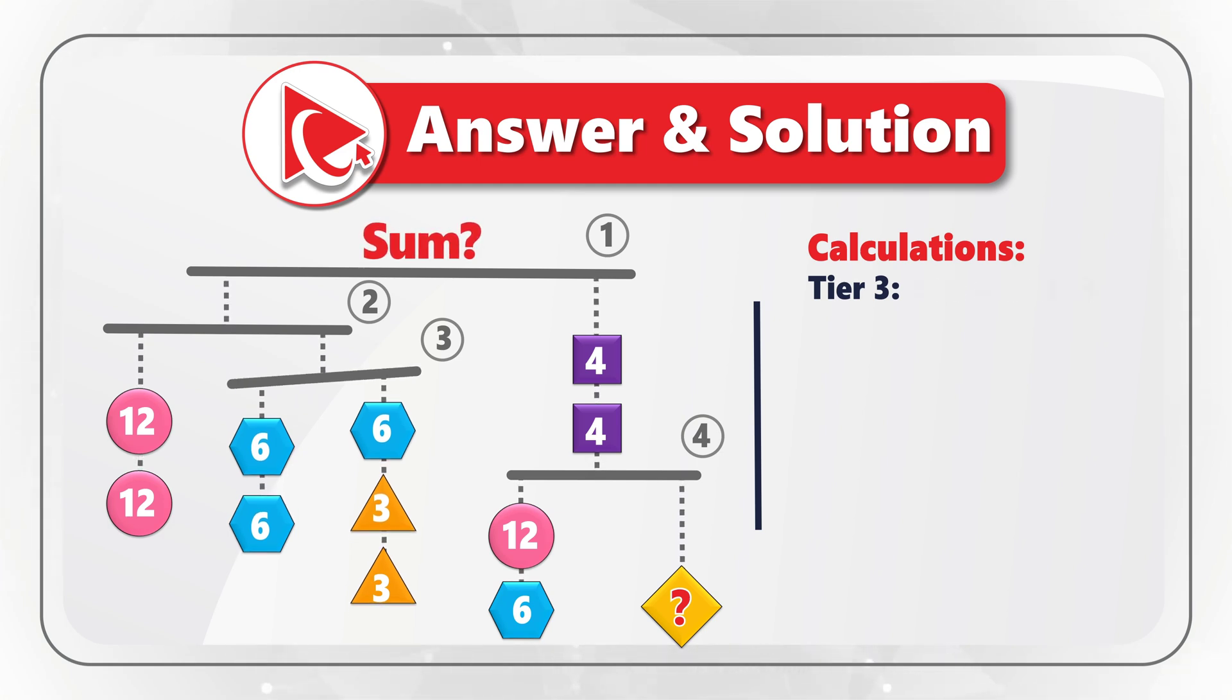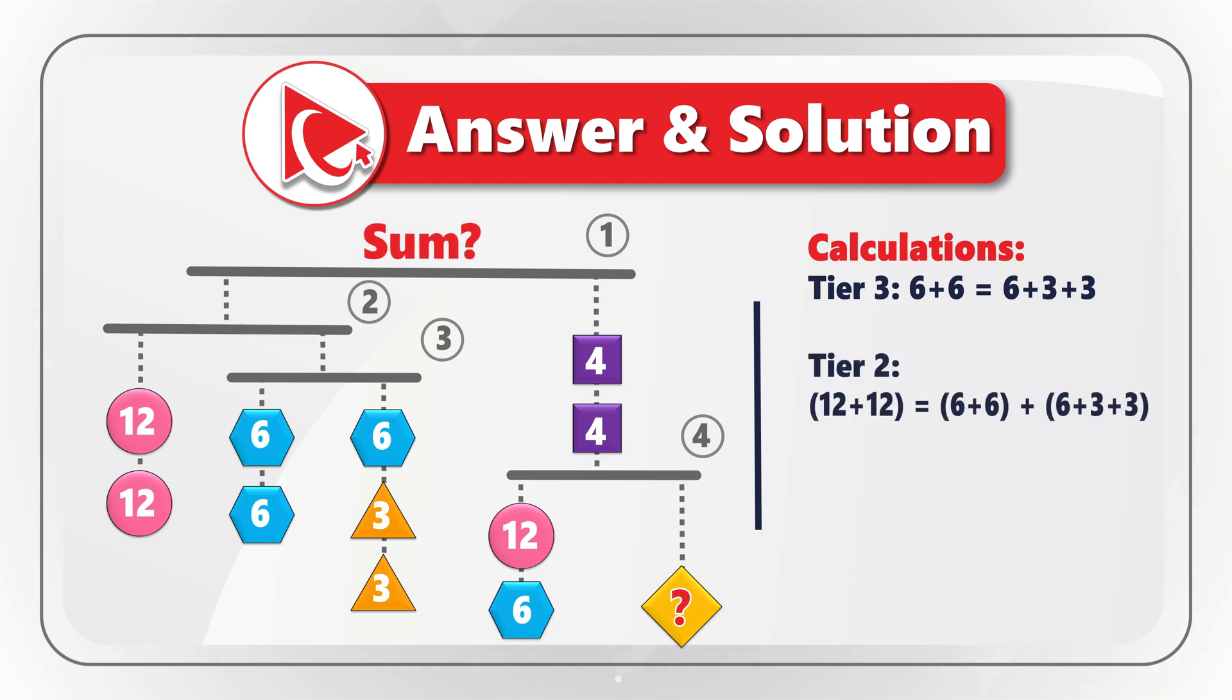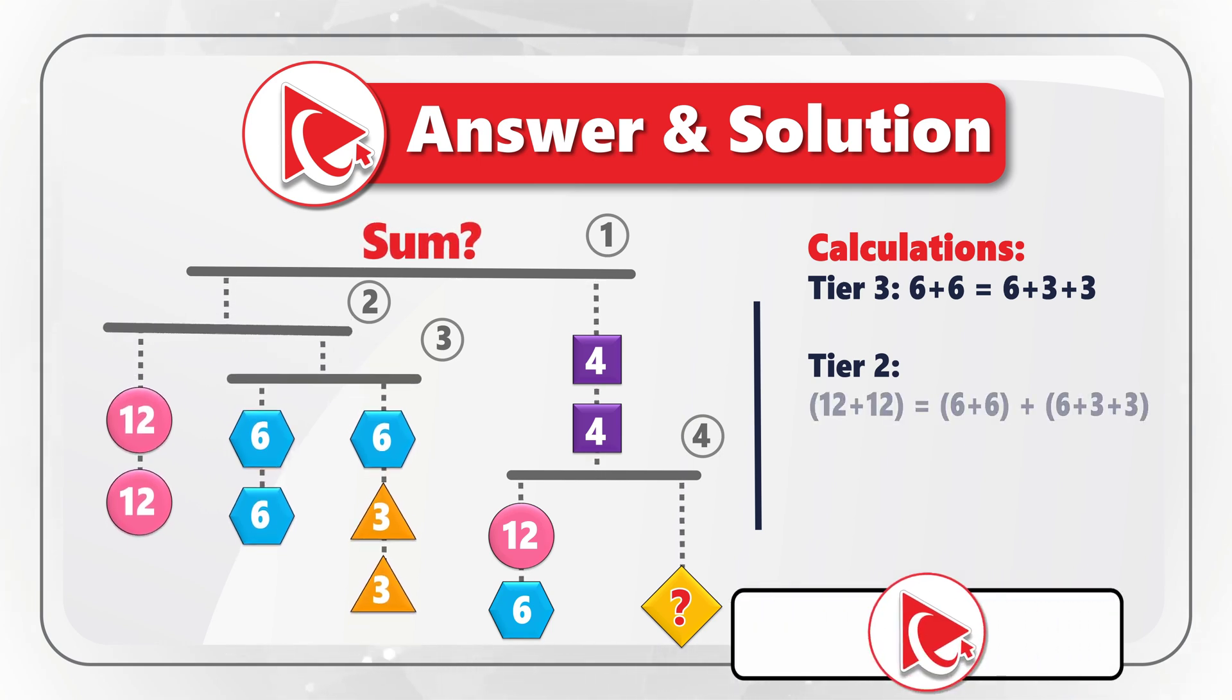Now let's look closely at tier 2. On the left of tier 2, we have two circles. Each circle has a value of 12. Two circles would equal 24. On the left of tier 2, we have two circles with total value of 24. And the entire tier 3, which also equals 24. This is what keeps tier 2 in balance.